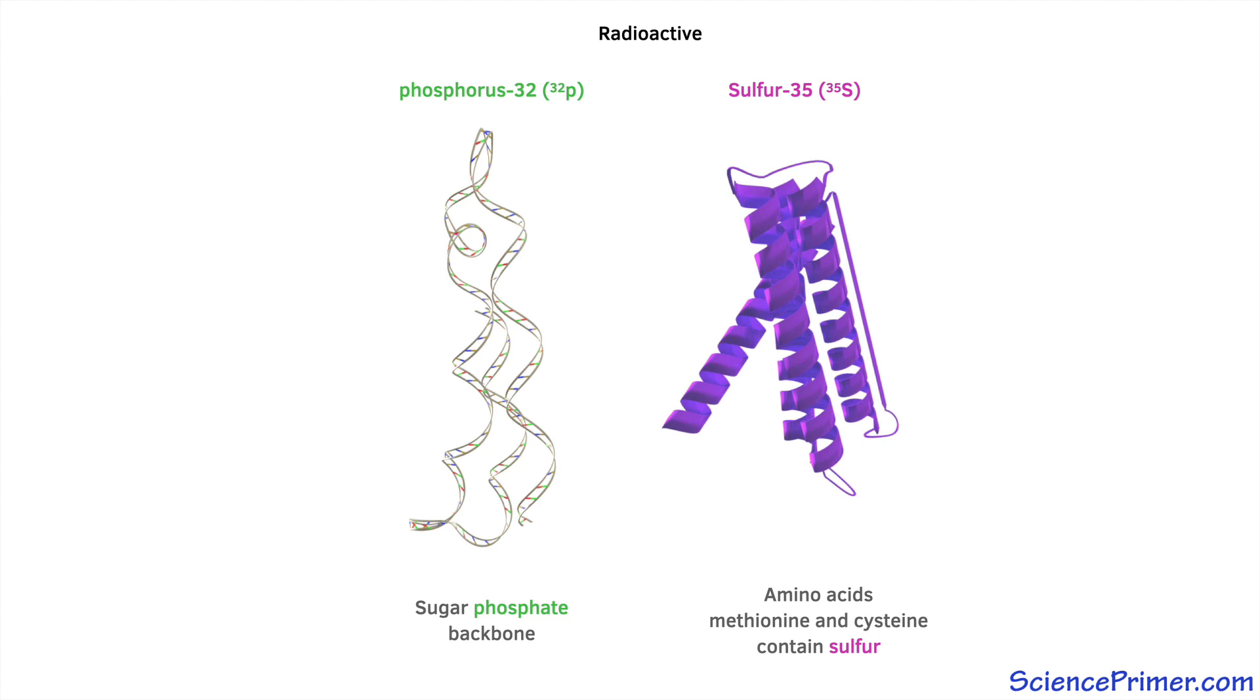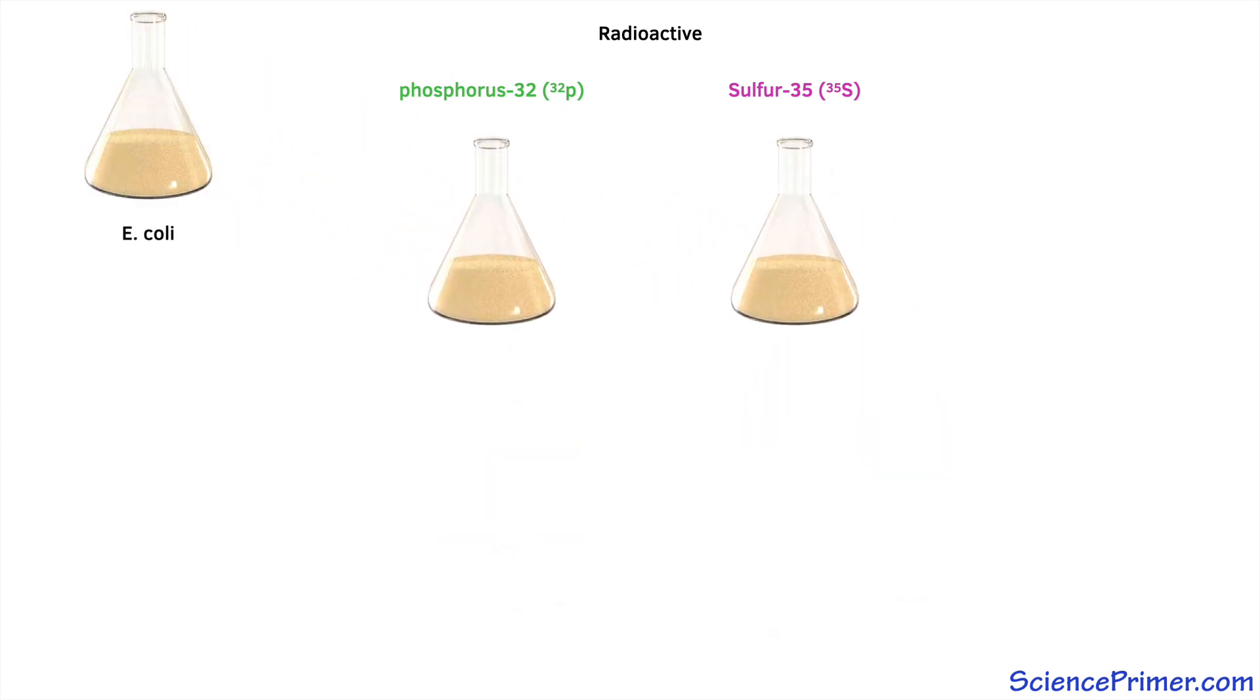To create the radiolabeled phage, they first grew susceptible strains of E. coli in the presence of either P32 or S35. These bacterial cultures were seeded with phage, and the infection process was allowed to proceed. After one infection cycle, the radioactive phage were isolated.